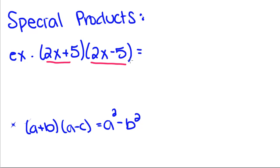And then we're going to draw some conclusions about it. So you're going to first, outside, inside, last. Two times 2x times 2x, 4x squared.